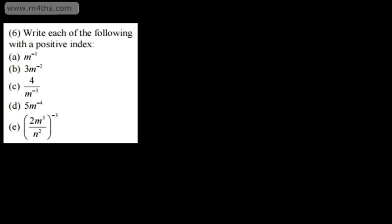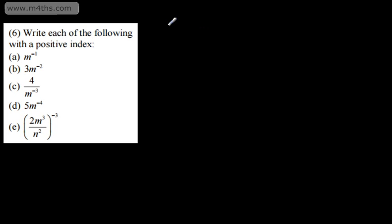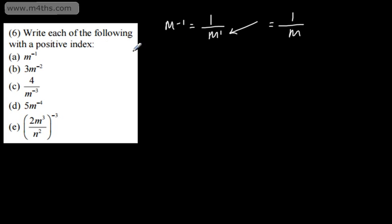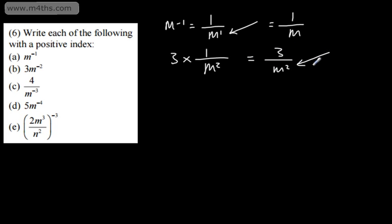Let's try some more. We're asked to write each of the following with a positive index. m to the negative 1 can be written as 1 over m to the positive power of 1. So we've now written this with a positive index — if you want, you can just write it as 1 over m. We're trying to get rid of the negative here. What we've got here is 3m to the negative 2 — it's not 3m all to the negative 2, it's just that part. So what we'd have is 3 multiplied by 1 over m squared, which we could write as 3 over m squared. So now we've got a positive index.